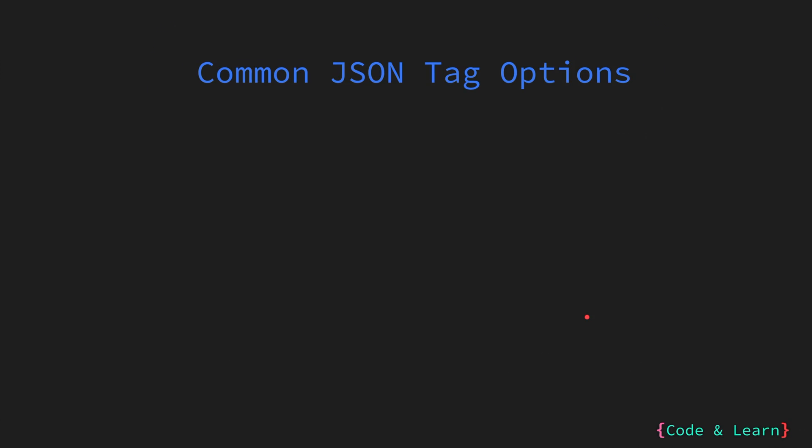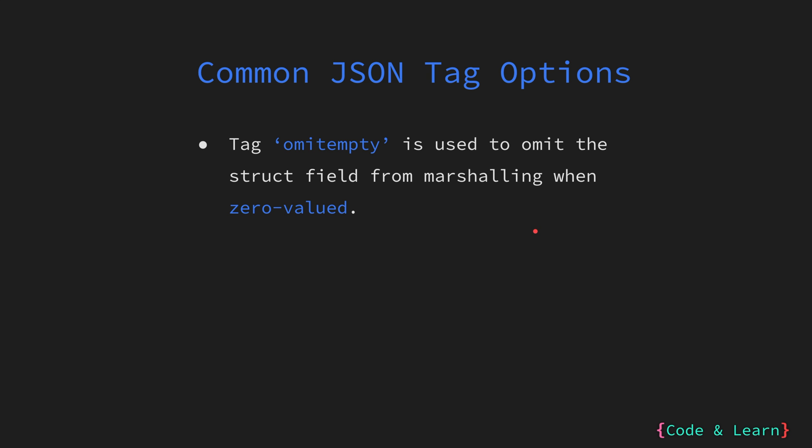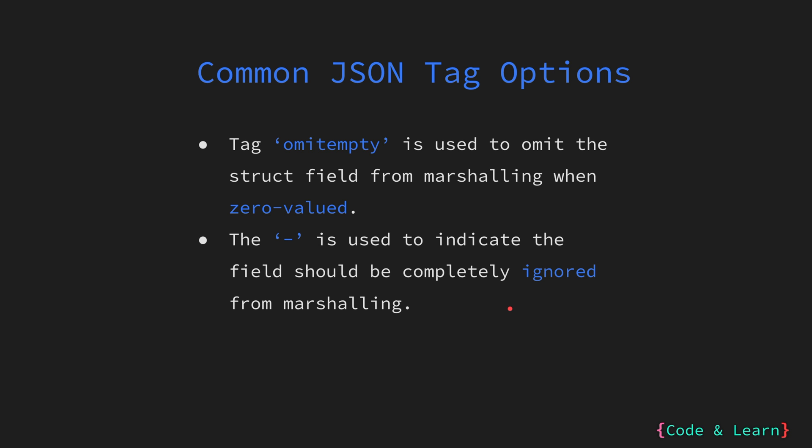Let us look at some common JSON tags. One of the widely used JSON tags is omitempty. It is used to mark that the struct field is excluded when the zero value for the field is provided. So if you have the struct field set to the zero value for the data type, it will be omitted. Then we have the dash, which is used to indicate that the field should be completely ignored from the marshalled JSON data.